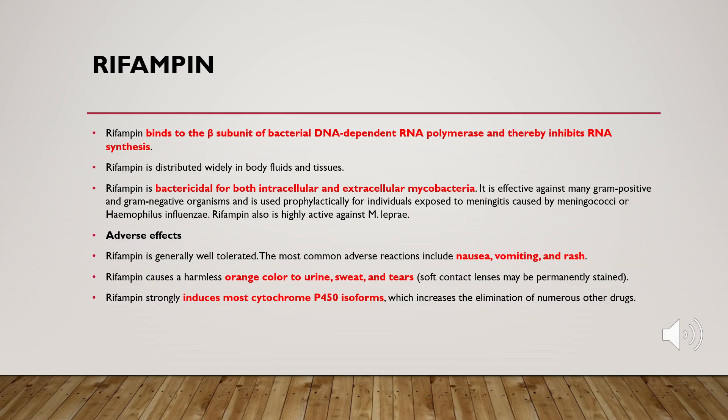For example, rifampicin increases the metabolism of contraceptive pills, making them ineffective — potentially resulting in unintended pregnancy. Always remember that rifampicin is an enzyme inducer that increases the elimination of many other drugs.